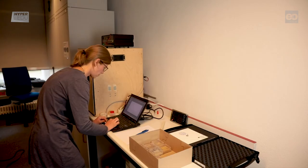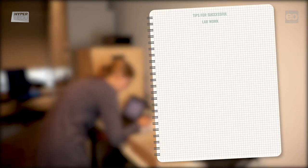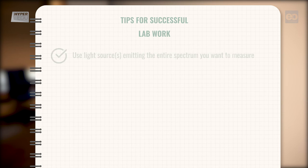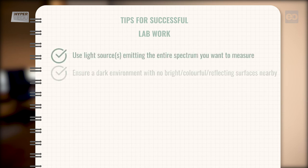Whenever you plan to carry out laboratory-based measurements with a point spectral radiometer, these tips may help you. Use light sources that emit the entire spectrum you want to measure. Make sure your environment is dark, except for the artificial light. There should be no bright, colorful, or reflecting surfaces nearby.